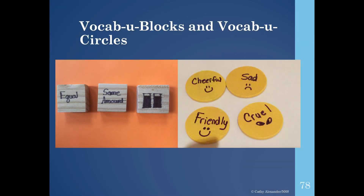These blocks are an example of an activity I incorporate to teach vocabulary. I buy wooden blocks at arts and crafts stores. One block has the target vocabulary word, another block has the definition of the word, and the third block has a visual illustration of the word. The children can roll the blocks and match the definition and pictures to the target vocabulary word. I also use the circles for matching antonyms and synonyms. They also have dry erase blocks available, and I really like those as well.